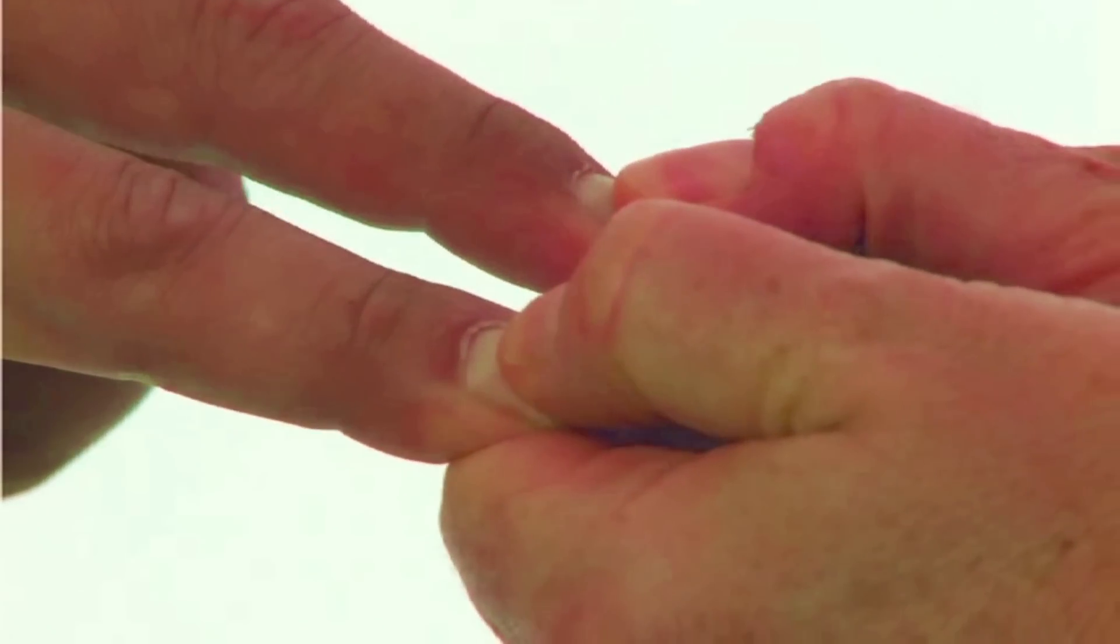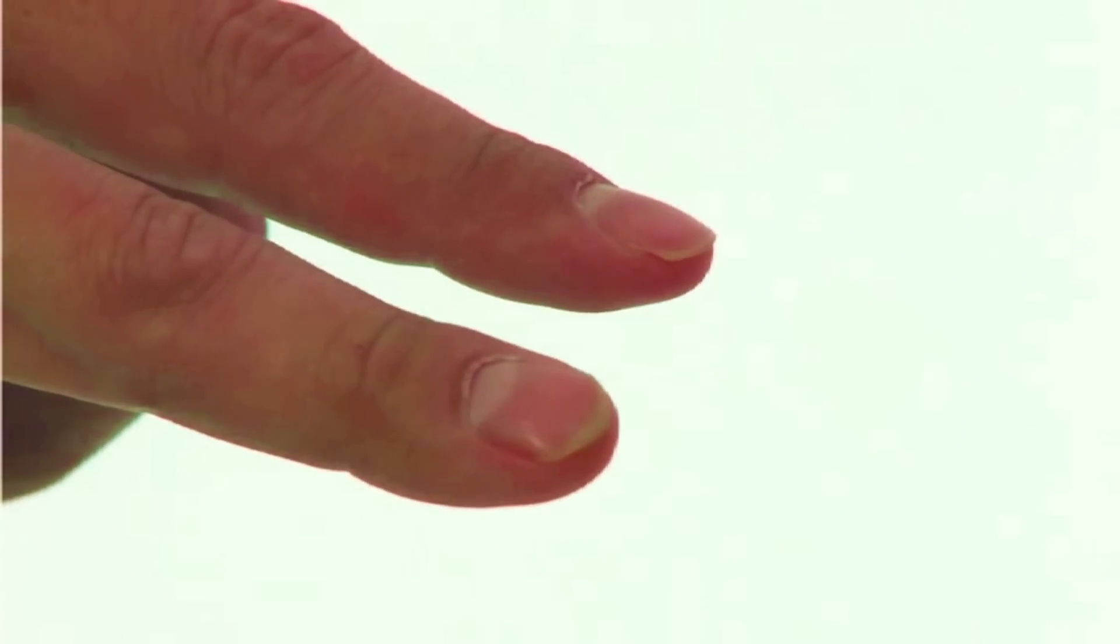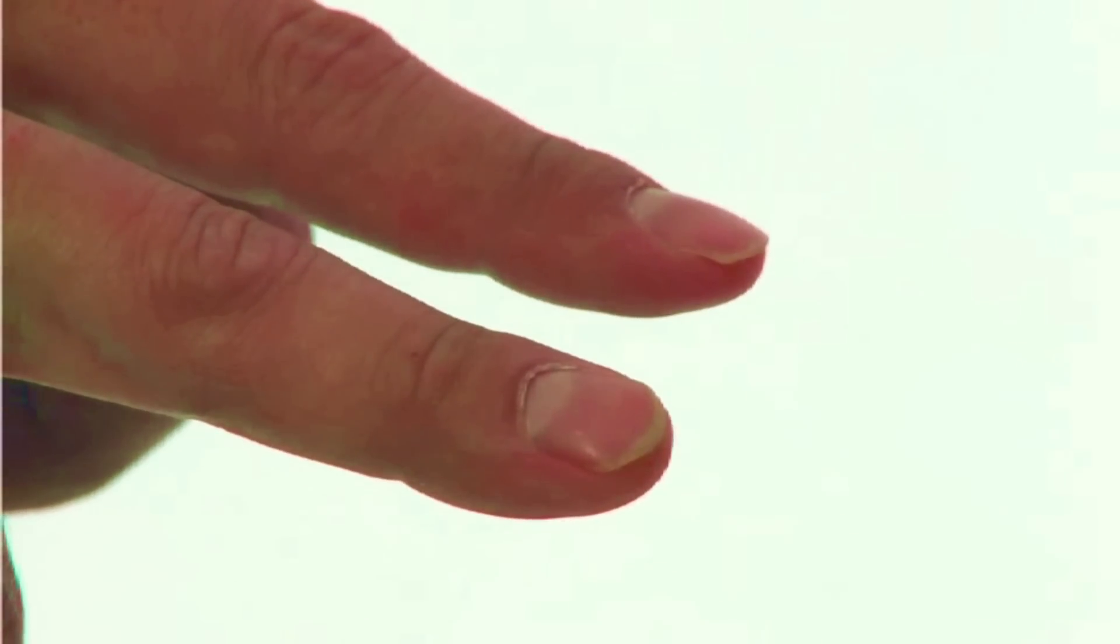To check circulation, pinch the fingertips on both hands. The nails should go white and return to the natural color at the same rate as the unbraced limb.